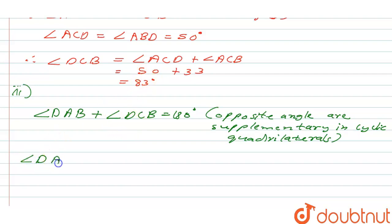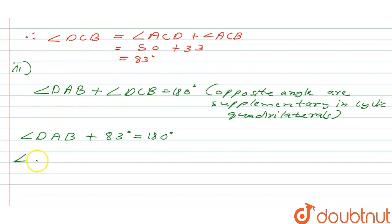So DAB plus 83 degrees is equal to 180 degrees. But DAB can be written as angle DAC plus angle CAB plus 83 equals 180 degrees.